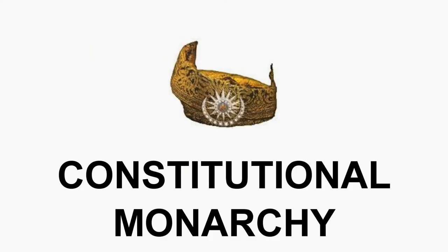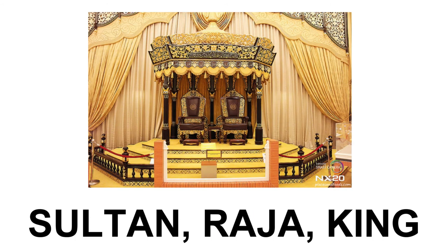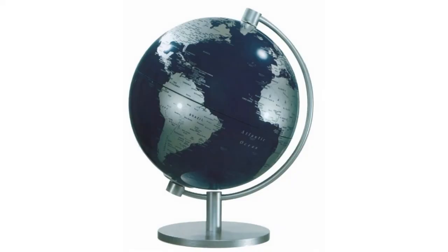The term constitutional monarchy obviously comes from two words: monarchy and constitution. In order for a government to be known as a constitutional monarchy, it must have a monarch or king. We have a king in Malaysia, and this is the unique feature of Malaysia — we have nine kings, and it is the only country in the world that has more than one king.